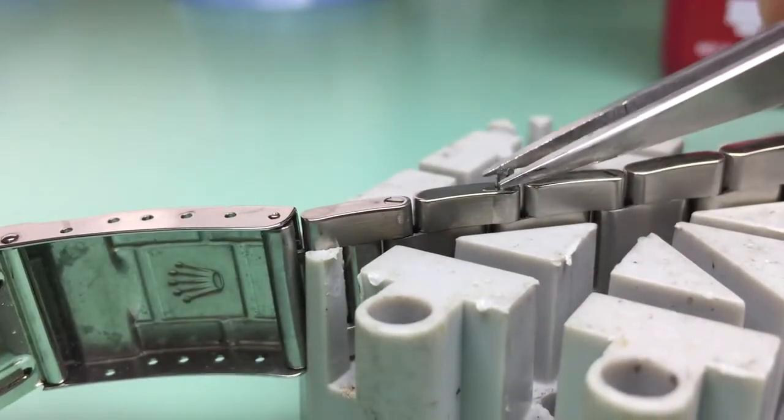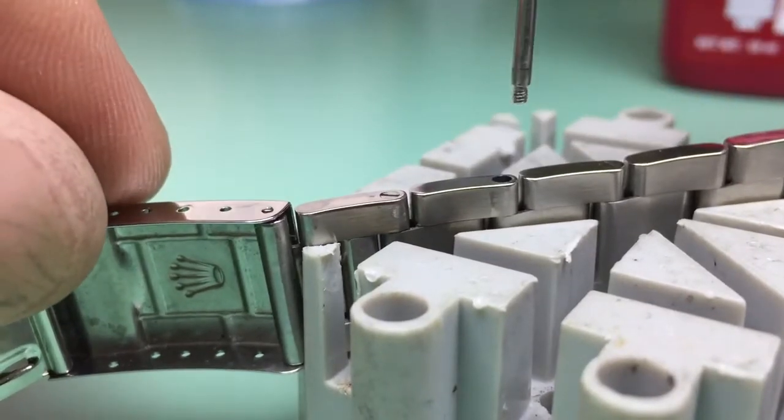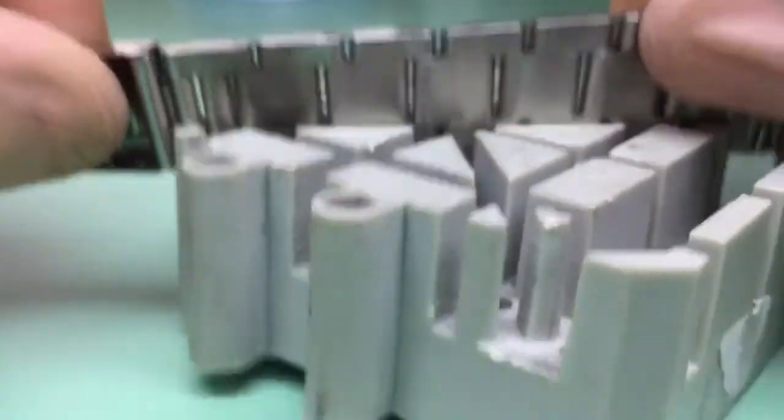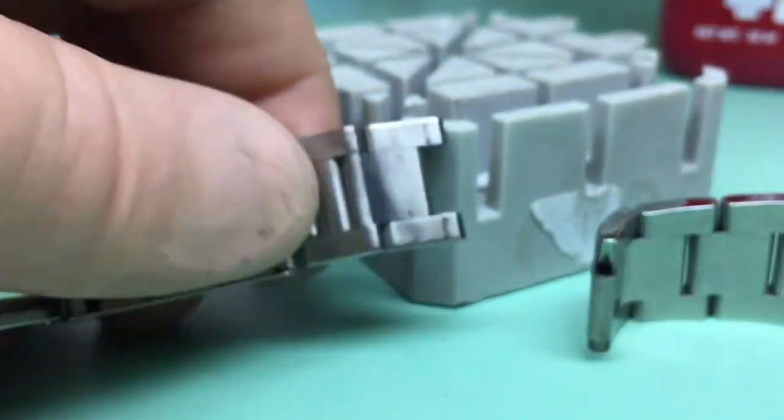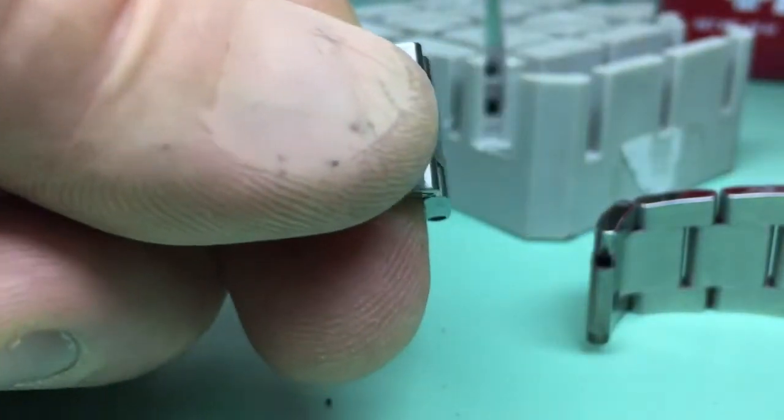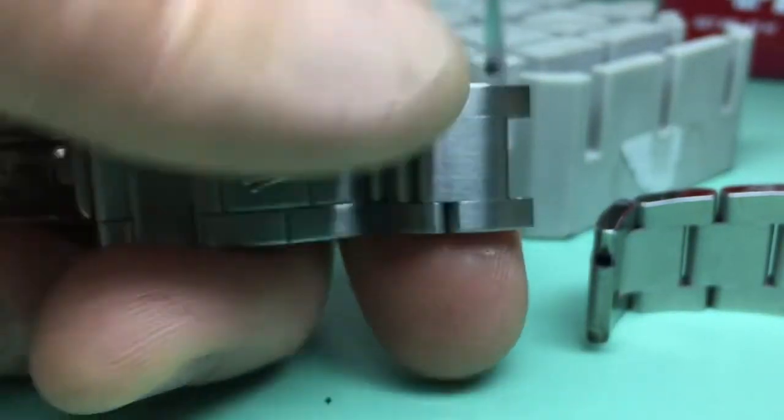So we can take our tweezers and remove the screw. Now our bracelet has come apart. Again, we can polish our link and we've removed all traces of discoloration.